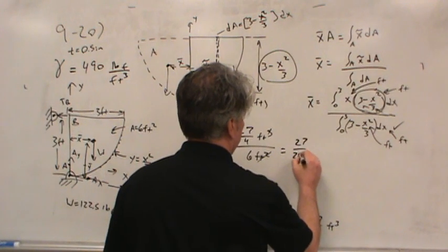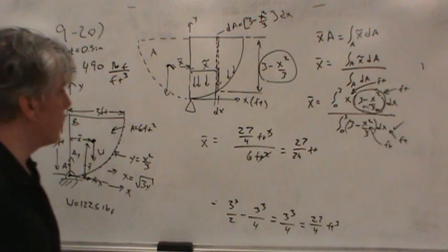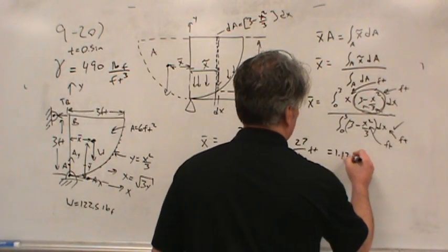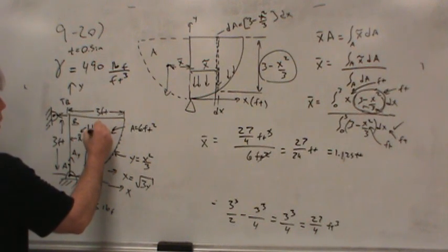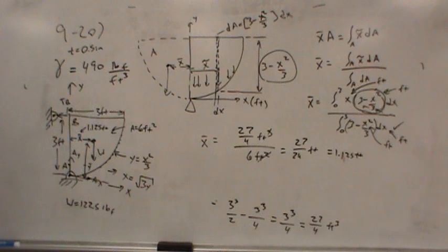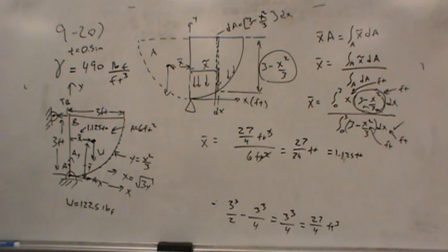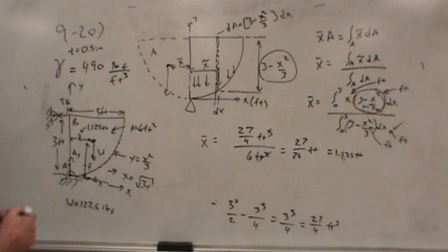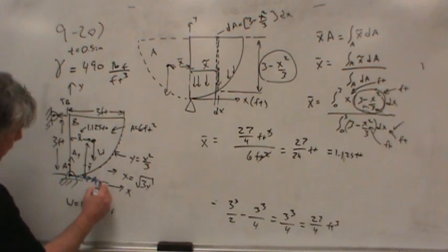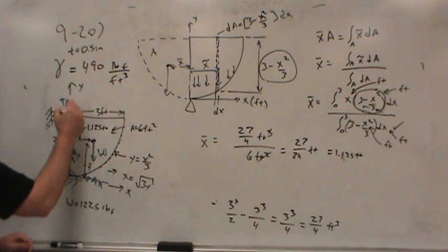So 27/4 cubic feet divided by 6 square feet gives x-bar. That's 27/24 = 1.125 feet. That's how far over the centroid is. How far up is the centroid? Sometimes you don't care. What were we asked to find? We were asked to find some forces — Ax, Ay, W, and the tension from point B.